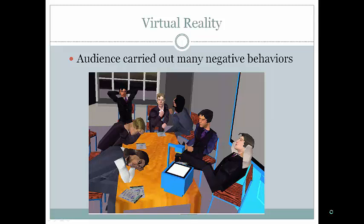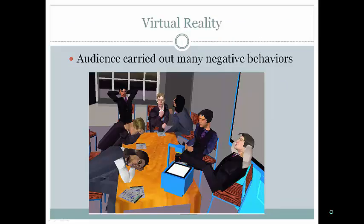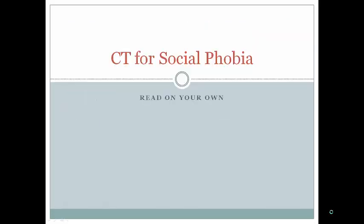Virtual reality audiences can display negative or positive attentive behaviors. You also want to integrate cognitive restructuring into exposure activities, having clients give SUDS ratings at one-minute intervals, verbalize their thoughts, and provide rational responses. For example, if an audience appears bored, the rational response might be: 'They probably had a long day and would be bored with anyone,' or 'I'm not the most thrilling person, but at least they're still sitting in the room.'